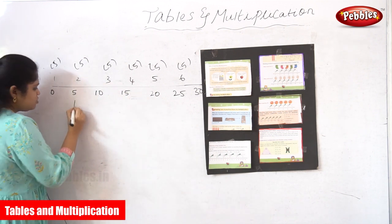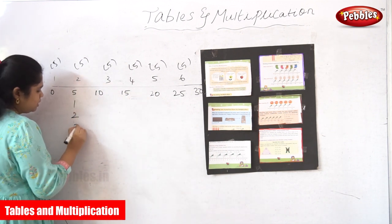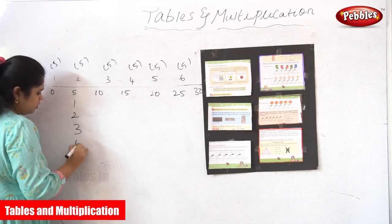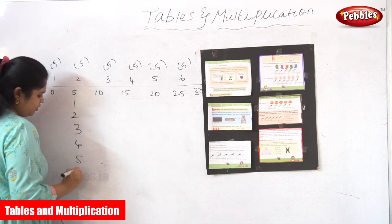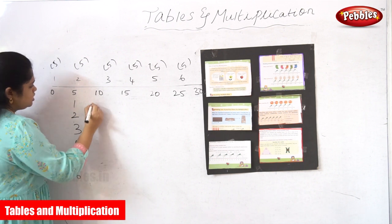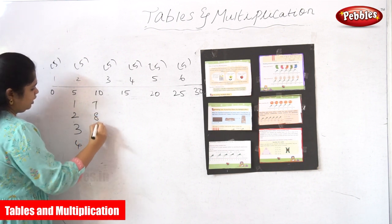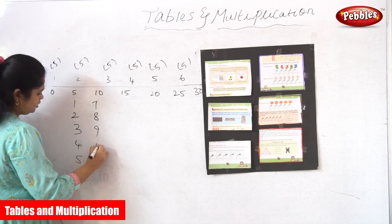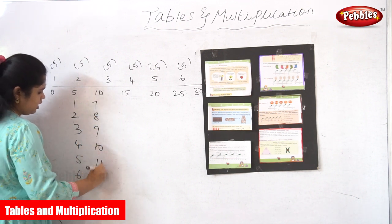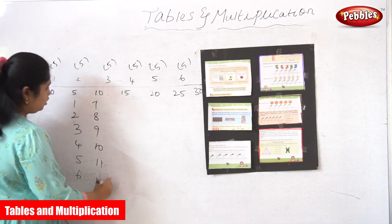Let me show how the skipping works in the number series: four, five, six, seven, eight, nine, ten, eleven, twelve, thirteen, fourteen, fifteen, sixteen, seventeen, eighteen, nineteen, twenty...